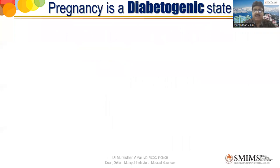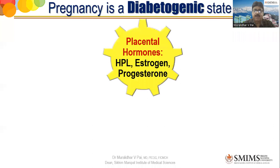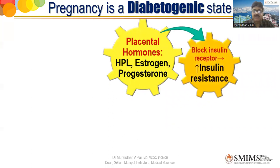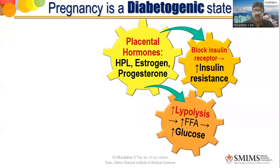It is difficult because pregnancy itself is a diabetogenic state. This slide explains everything and is very important in the etiopathogenesis of GDM. Placental hormones such as human placental lactogen, estrogen, and progesterone block insulin receptors, resulting in increased insulin resistance. This explains why even a young woman may develop diabetes when she becomes pregnant — because of these additional hormones. These hormones also stimulate increased lipolysis, producing increased free fatty acids which are converted to glucose — a double-pronged attack.